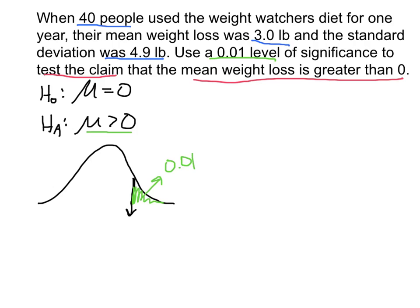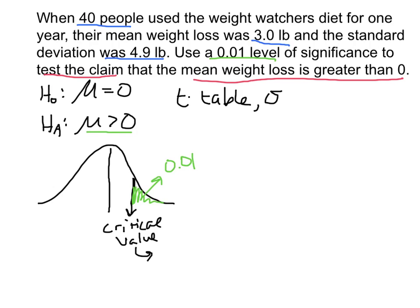I want to compare my critical value with my test statistic. I'm looking for the critical value that has .01 above it. The question is whether I'm looking in the T table or the Z table. We know we're going to use the T table, because the standard deviation of the population is not known. I'm going to look up the T score that separates the upper 1% from the lower 99%.